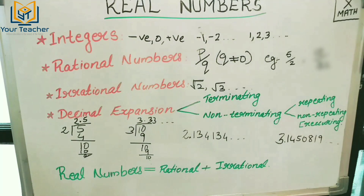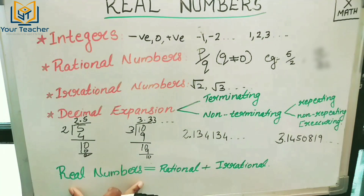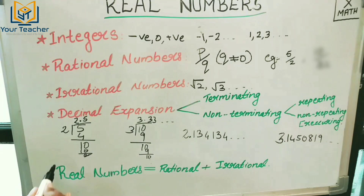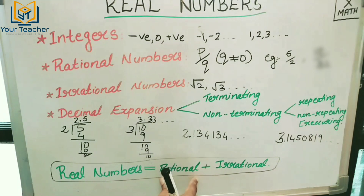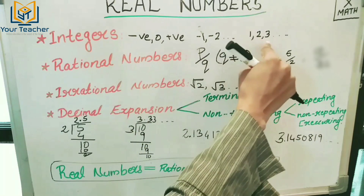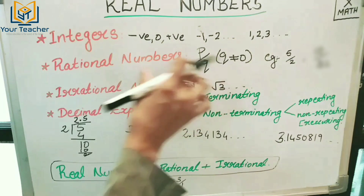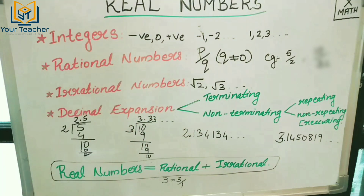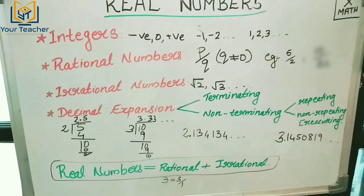Next is Real Numbers. What are real numbers? Real numbers are all types of numbers which we learned earlier. Real numbers equal rational numbers plus irrational numbers. Integers such as 1, 2, 3 can be written as 3 by 1 — so all integers are rational numbers, and rational numbers plus irrational numbers together form real numbers.